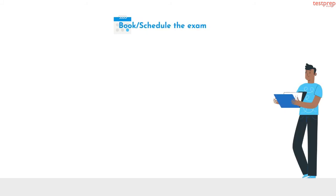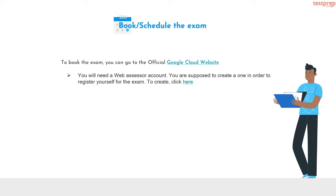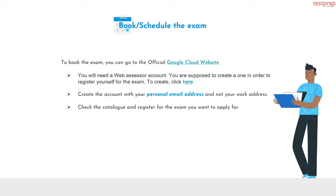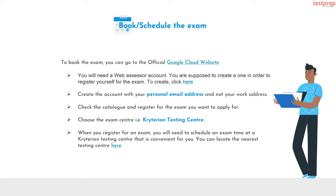To schedule the exam, if you are determined to become a certified Google Cloud Developer, it's time to register. Following are the steps: First, you will need a Web Assessor account — create one to register for the exam. Second, create the account with your personal email address, not your work address. Third, check the catalog and register for the exam you want. Fourth, choose the exam center, that is, Criterion Testing Center. Fifth, schedule an exam time at a Criterion Testing Center that is convenient for you.